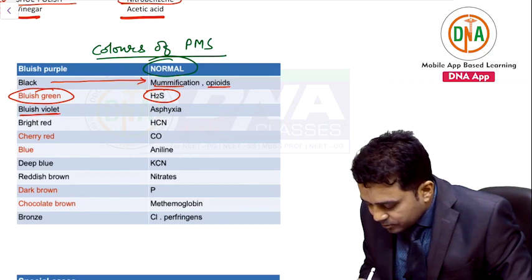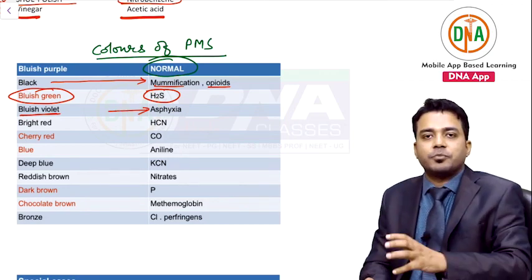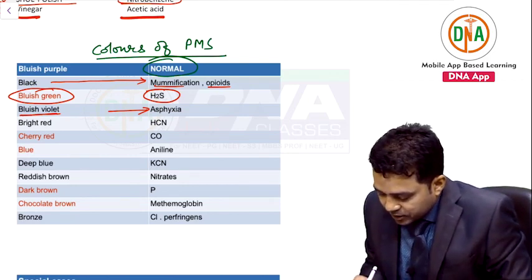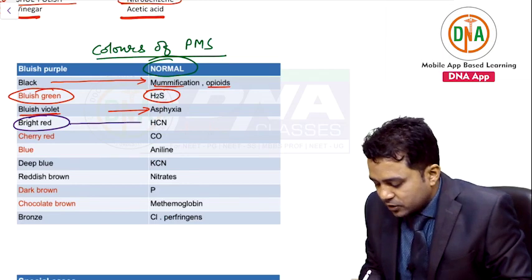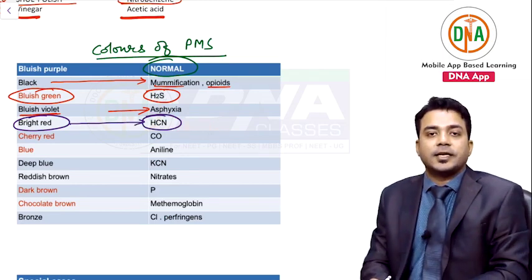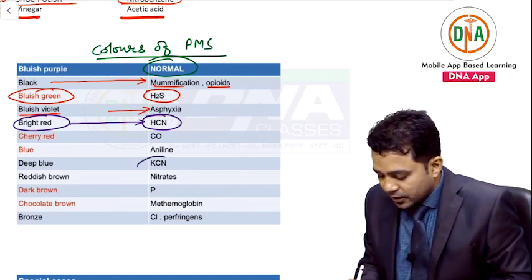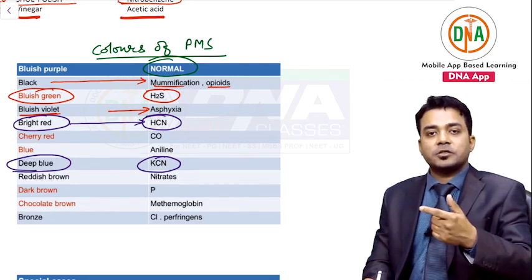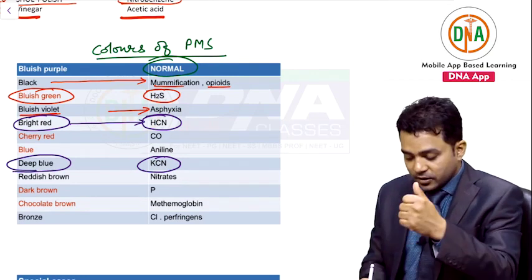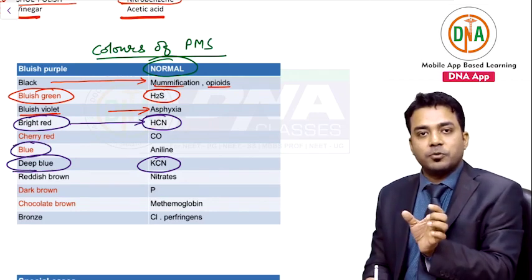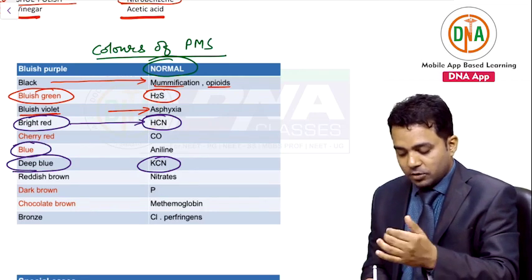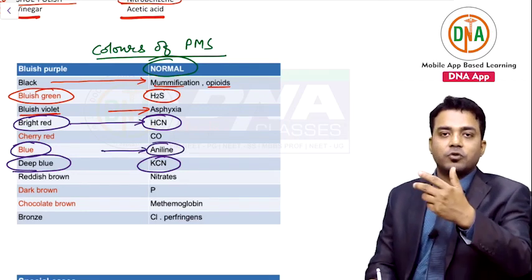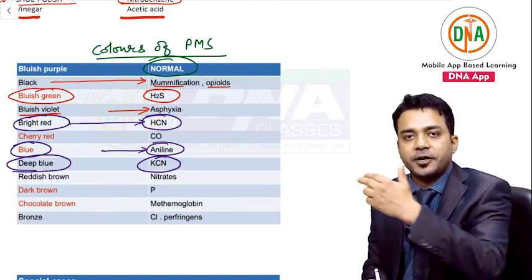Bright red PMS — asked in DNB exam — is seen in hydrogen cyanide poisoning. Compare this with potassium cyanide, which gives deep blue PMS. Blue PMS (not deep blue) is due to aniline poisoning. Cherry red PMS, known by every medico, is due to carbon monoxide poisoning.